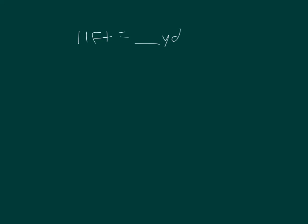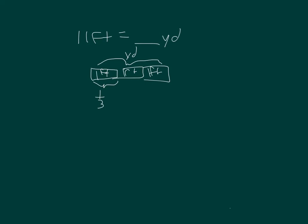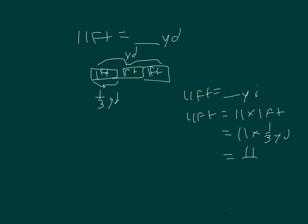Eleven feet equals how many yards? Which units are larger, feet or yards? Right, yards are larger. What fraction of a yard is a foot? Right, one-third. Each of those is one foot — one-third of a yard, one-third of a yard, one-third of a yard. Eleven feet equals eleven times one foot, equals eleven times one-third of a yard, equals eleven-thirds of a yard, which is three and two-thirds yards. So eleven feet equals three and two-thirds yards.